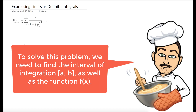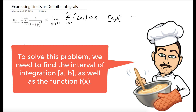So we want to write our limit as the limit as n goes to infinity of the sum from i equals 1 to n of our function evaluated at x sub i times delta x, where our x value varies from a to b. And if we can write it like this, then that's equivalent to the integral from a to b of f of x dx.